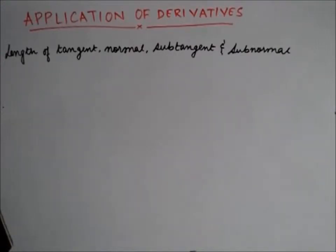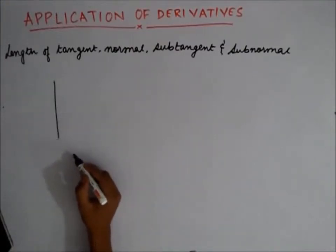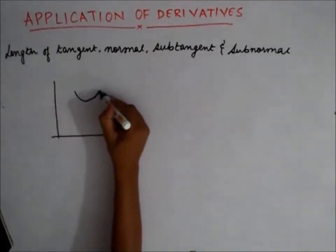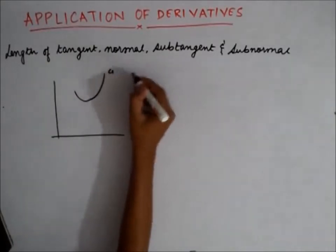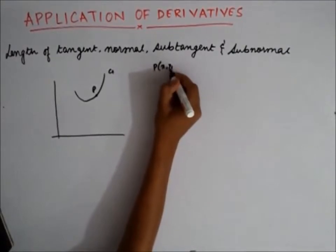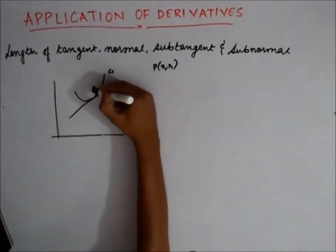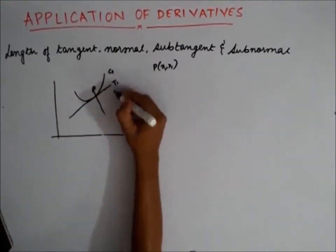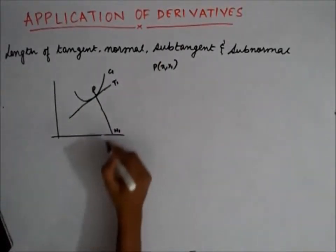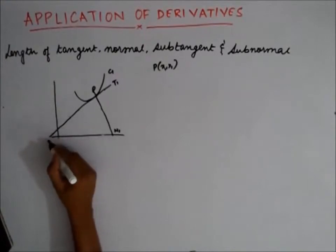What is the length of a tangent? How do we define the length of a tangent? Let's say we have a curve C1. At point P, given by (x1, y1), we draw a tangent and we also draw a normal. The tangent is T1 and the normal is N1. Let the tangent intersect the x-axis at T.